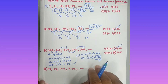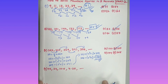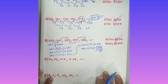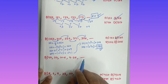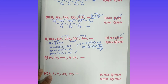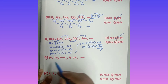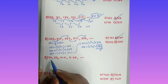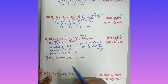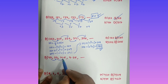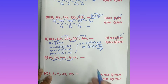Now question number 4: 48, 23, 10.5, 4.25, dash. This is a very interesting question. The numbers are already in decreasing order, but there is a huge difference gap: 48 to 23 huge gap, 23 to 10.5 huge gap, 10.5 to 4.25 huge gap. When there is a huge difference gap in decreasing order, you apply division logic.